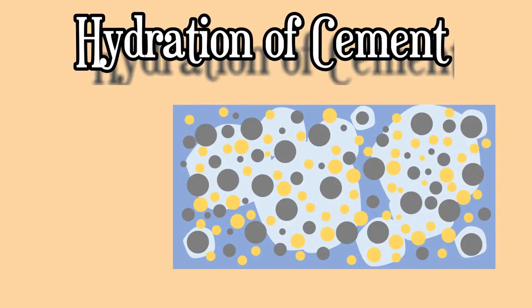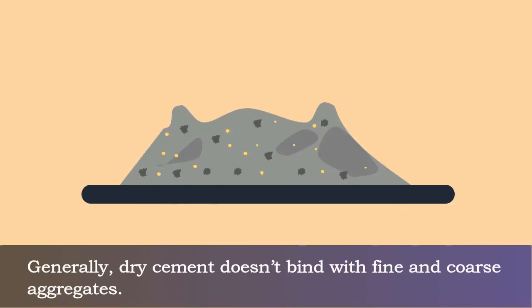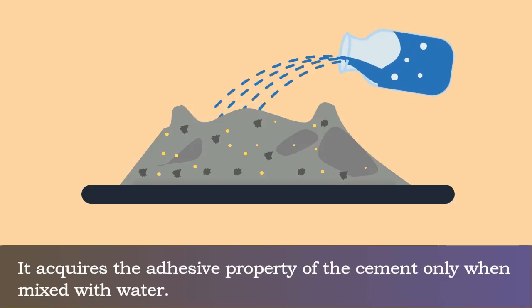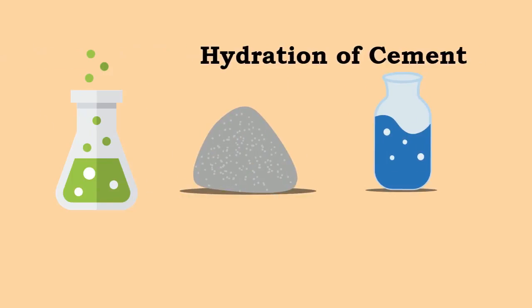Hydration of cement: Generally, dry cement doesn't bind with fine and coarse aggregates. It acquires the adhesive property only when mixed with water. The chemical reactions that take place between cement and water are referred to as hydration of cement.